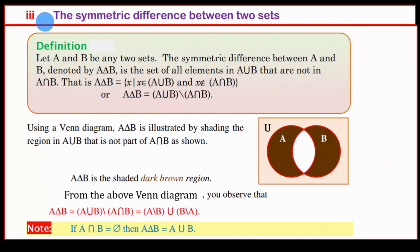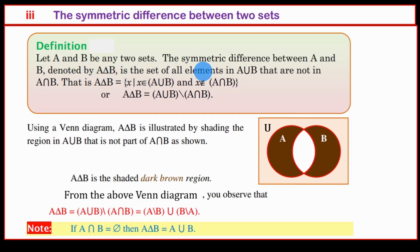The symmetric difference between two sets: let A and B be any two sets. The symmetric difference between A and B, denoted by A delta B, is the set of all elements in A union B that are not in A intersection B.